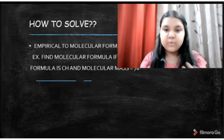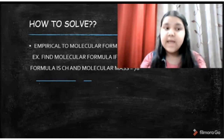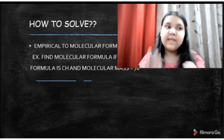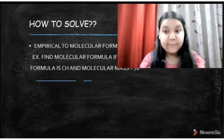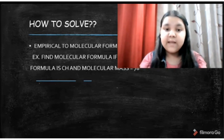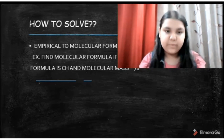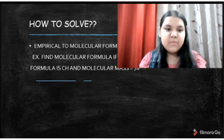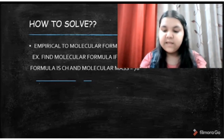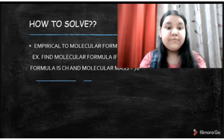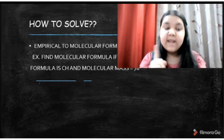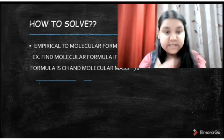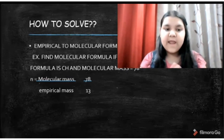For converting empirical to molecular formula, you are given two things: the empirical formula and the molecular mass. We need the molecular mass because the empirical formula of many different chemical compounds can be the same. The formula for molecular formula is n times empirical formula, where n is an integer, and n equals molecular mass divided by empirical mass.